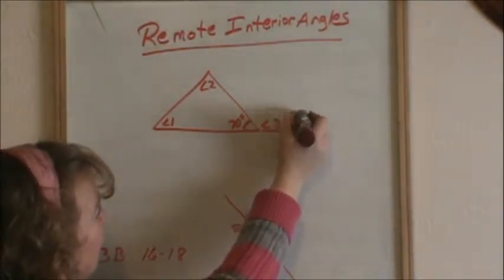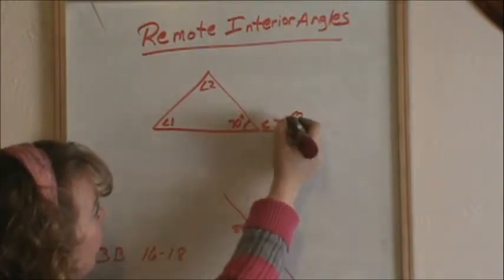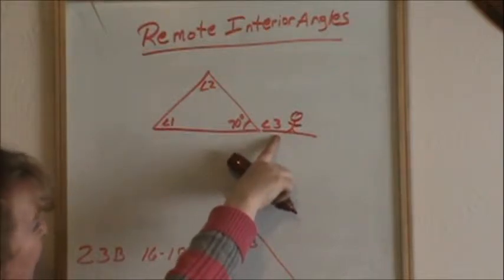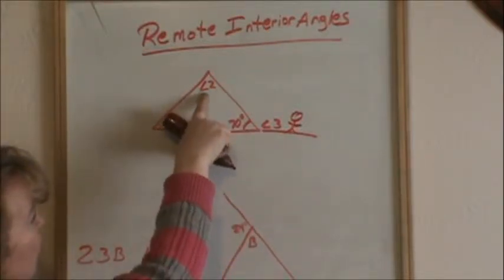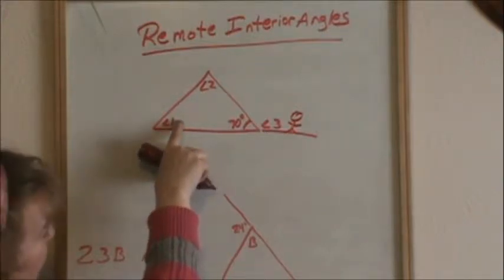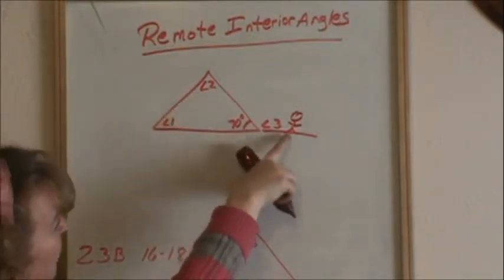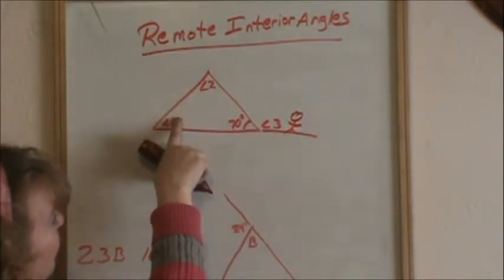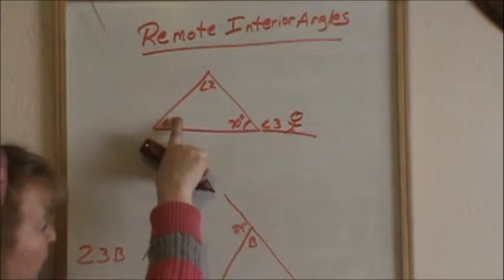Let's just say I was standing at angle 3. From the perspective of angle 3, angles 1 and 2 would be considered remote interior angles. Remote meaning they are the furthest from me. If I'm standing at angle 3, then angle 1 and angle 2 are the furthest angles away from me, but yet they are inside the triangle.